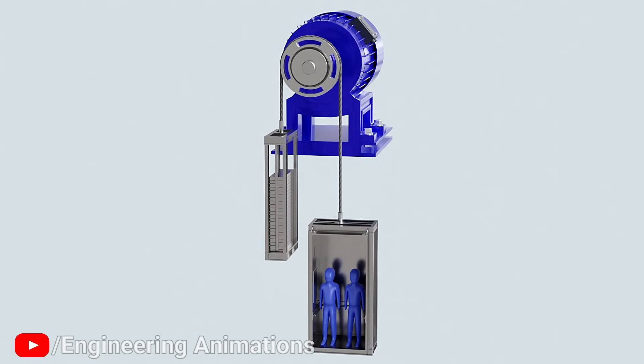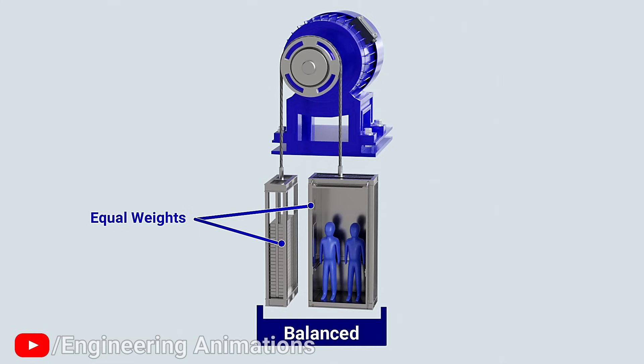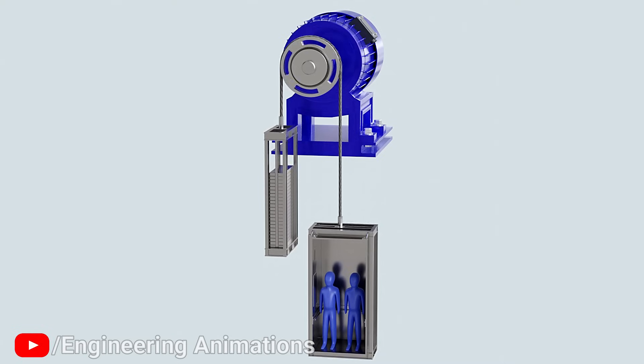This is why the counterweight is introduced. The basic idea of counterweight is that if there are two equal weights attached to either end of a cable, then the system is perfectly balanced. The only job of the motor is to tip the balance one way or the other.